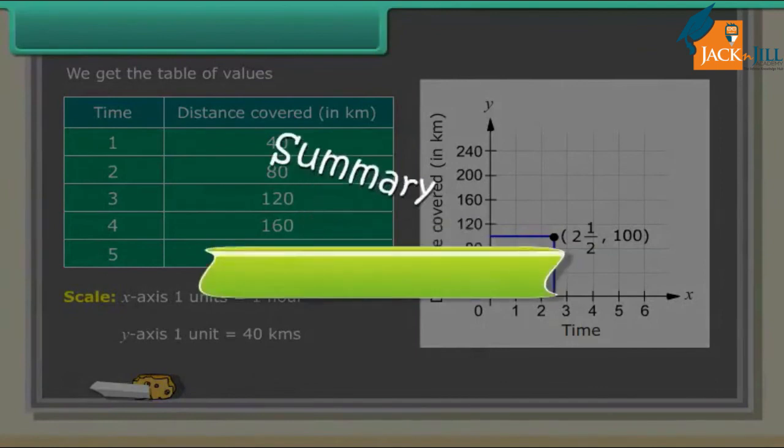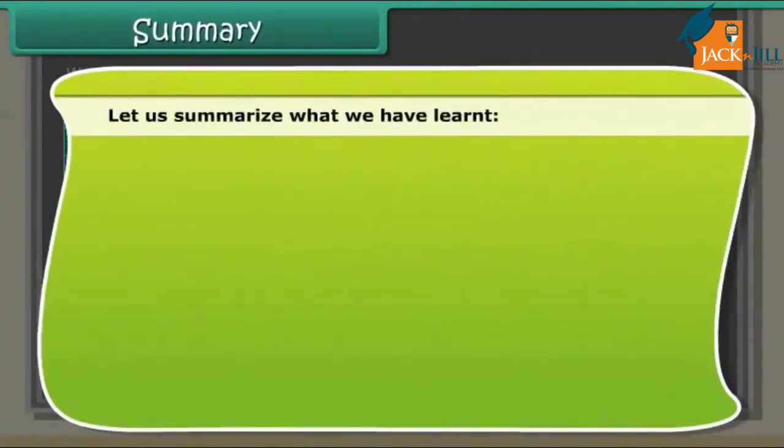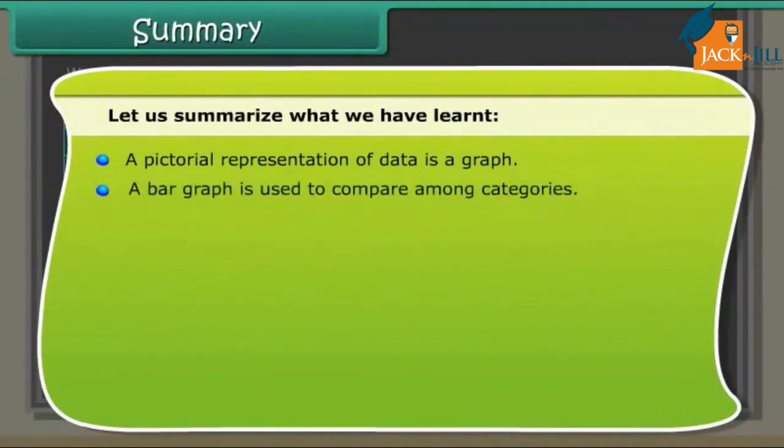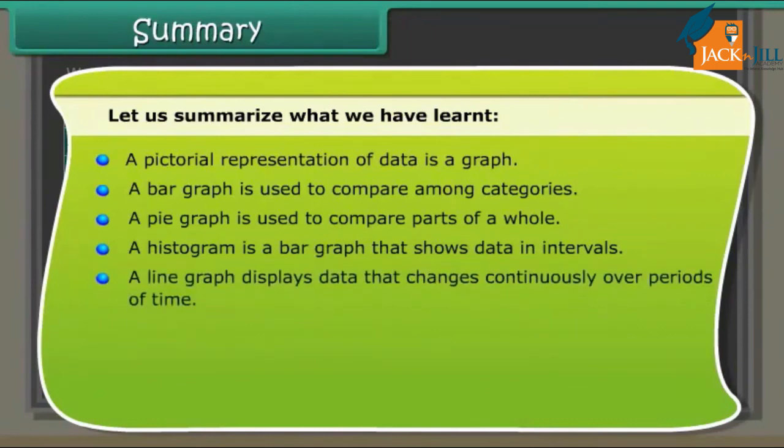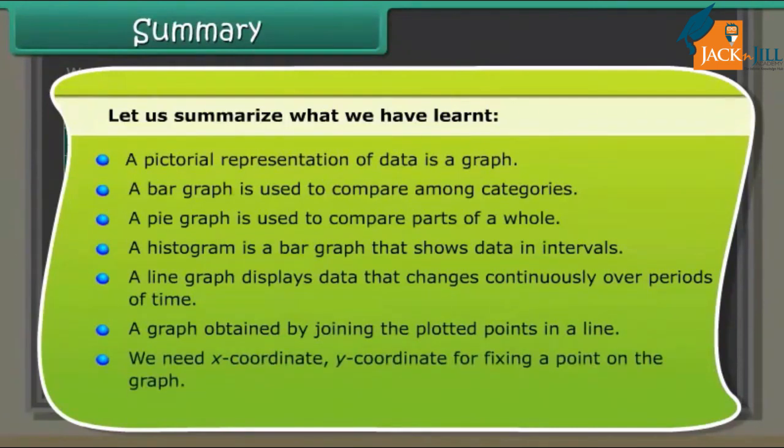Summary: Let us summarize what we have learned. A pictorial representation of data is a graph. A bar graph is used to compare among categories. A pie graph is used to compare parts of a whole. A histogram is a bar graph that shows data in intervals. A line graph displays data that changes continuously over periods of time. A graph obtained by joining plotted points in a line. We need x-coordinate and y-coordinate for fixing a point on the graph. We can show direct variation through line graphs.